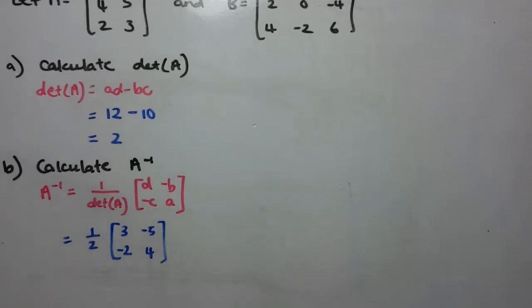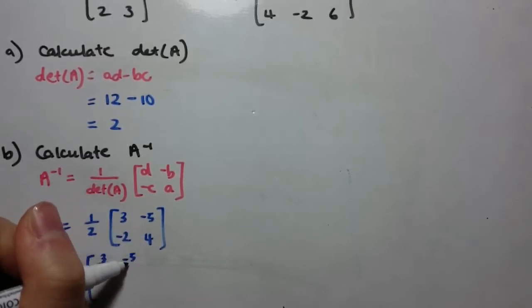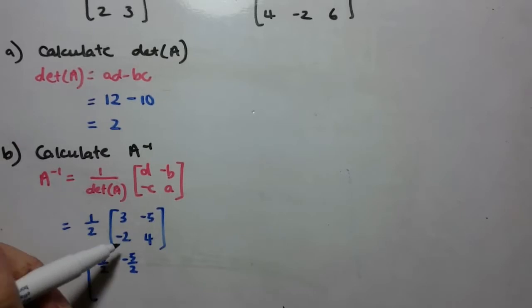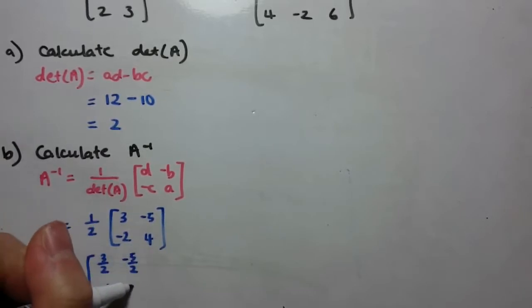If we just simplify this, we'll end up with a half times 3 gives us 3 on 2, a half times negative 5 is negative 5 on 2, a half times negative 2 is negative 1, and a half times 4 is 2.